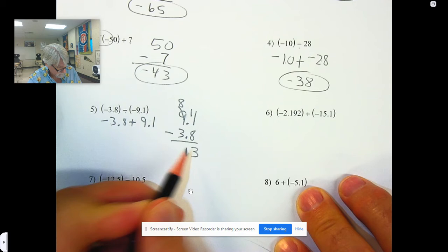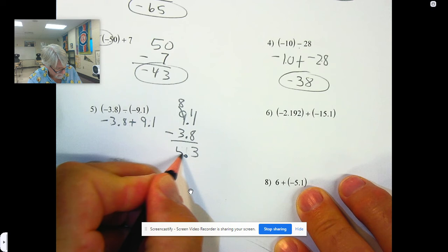When the signs are different, you have to find the difference in their absolute values. And you do that just like I showed you last week. That's a decimal point. 8 minus 3 is 5.